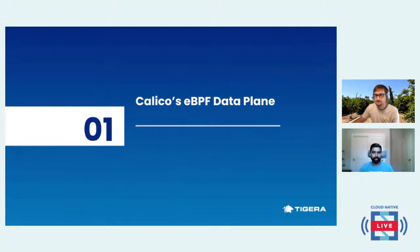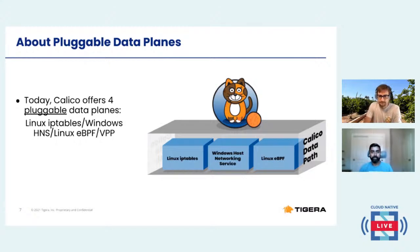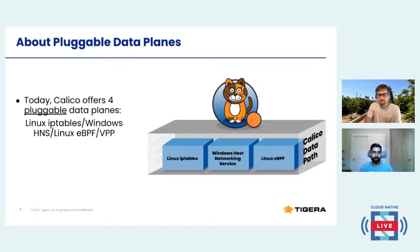Let me start by talking about Calico's eBPF data plane. Today, Calico offers four data plane types: standard Linux with IP tables, Windows HNS, eBPF, and VPP. To put it in simple words, eBPF is like an in-kernel virtual machine that gives superpowers to your Linux programs. You can attach mini programs to low-level hooks in the kernel, giving you the ability to do advanced networking and security functions within your software.